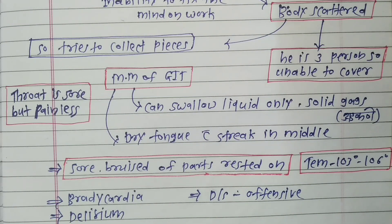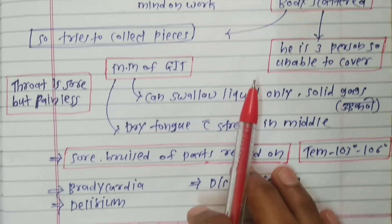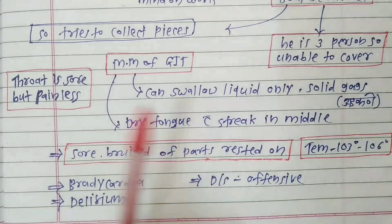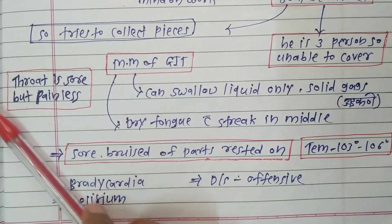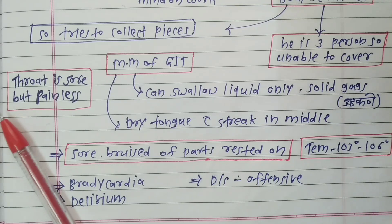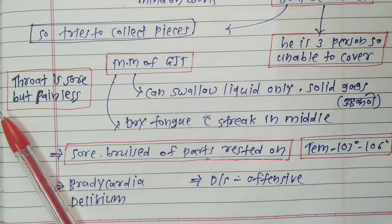The patient is in delirium, and all discharges are offensive. This is the remedial mind map of Baptisia tinctoria. Baptisia fever is important. Thank you for watching.